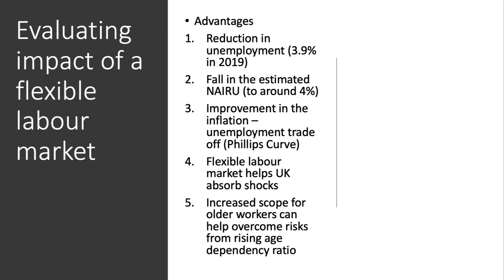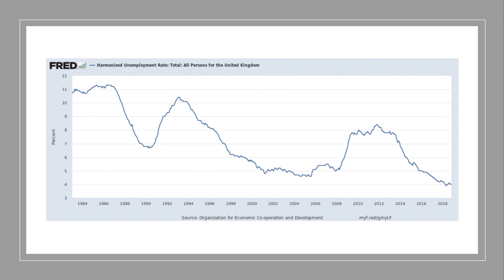Having labour market flexibility is also quite useful in helping the wider economy absorb external economic shocks. Flexibility in terms of hours, contracts, and the ability to work at home can often help older workers who might have taken early retirement to come back into the labour force, which can reduce risks from an increase in the age dependency ratio. The key advantage really is the unemployment data — this chart takes us through the unemployment rate as a percentage from 1980 through to 2019, and you can see how much lower it is now than at the end of the last recession in 2013 and back in the mid-1980s and early 1990s.